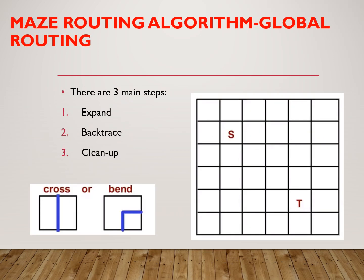Now we are going to see what global routing algorithm we use. One of the algorithms is called NACE routing, which is used for global routing. In this algorithm, there are three main steps: the first is expand, the second is backtrace, and the third is clean up.